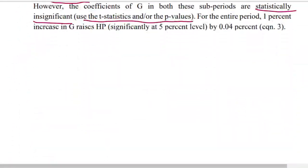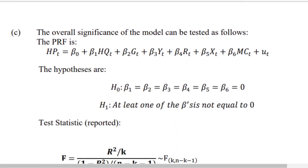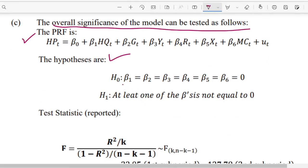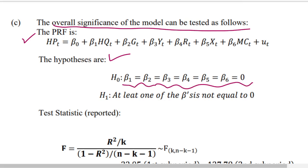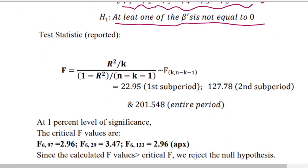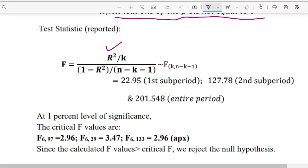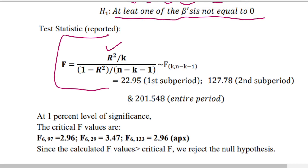For question C — overall significance of the model — we use the F-test. The null hypothesis is that all coefficients of the independent variables equal zero; the alternative is that at least one beta is not equal to zero. The F-statistic formula is [R² / k] / [(1 − R²) / (n − k − 1)]. Using the R² values and observation counts from the regression results, the F-values are 22.95 for period one, 7.78 for period two, and a third value for the entire period.